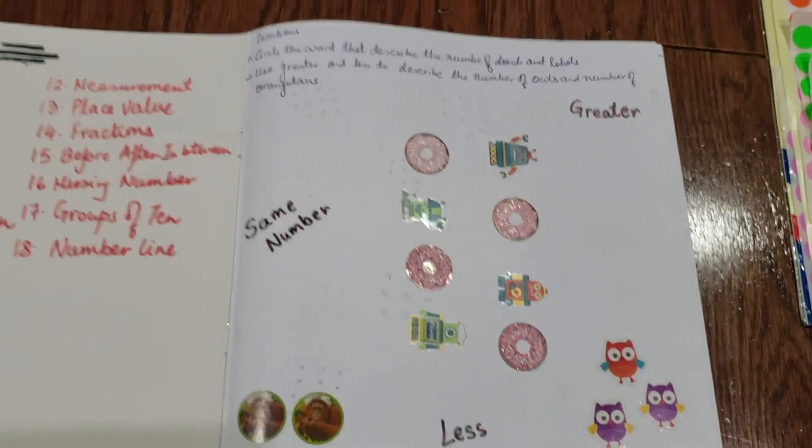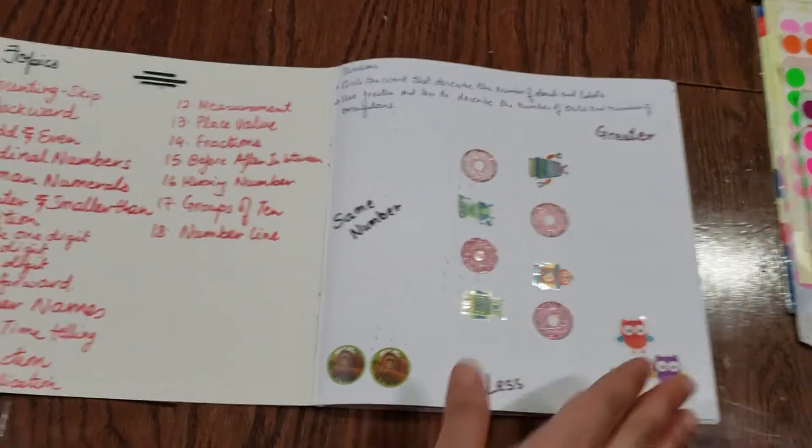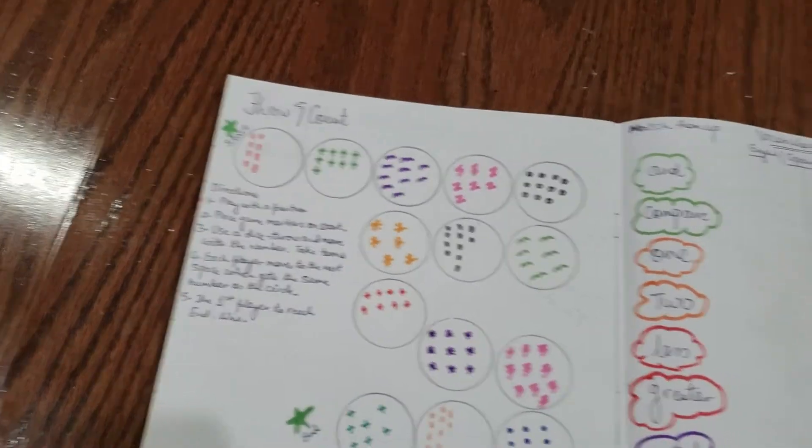This one is for greater, same number, plus less - he needs to figure out how it needs to be done. That's activity number one. Then there's a throw-and-count activity where you need the dice.